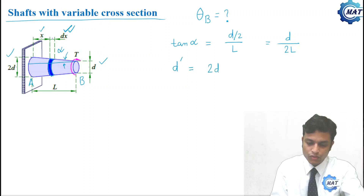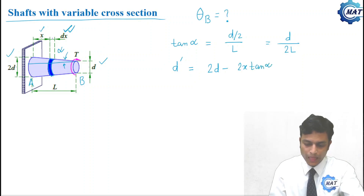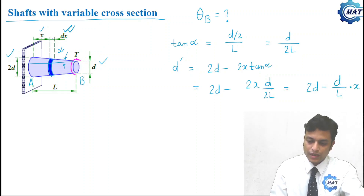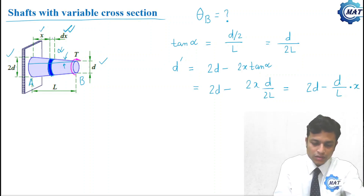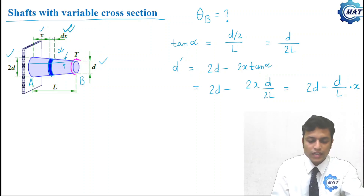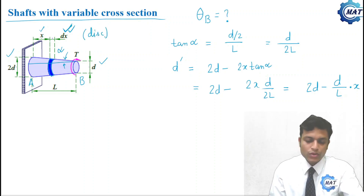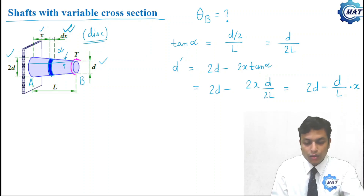The diameter of the element is d′ = 2D − 2x·tan(α) = 2D − (D/L)·x. This d′ is considered constant within the small length dx. For this disc element, we can apply the elastic equation of torsion because d′ doesn't vary within the small length dx.